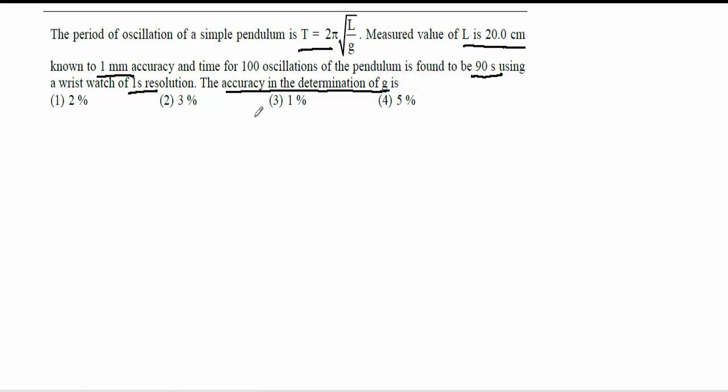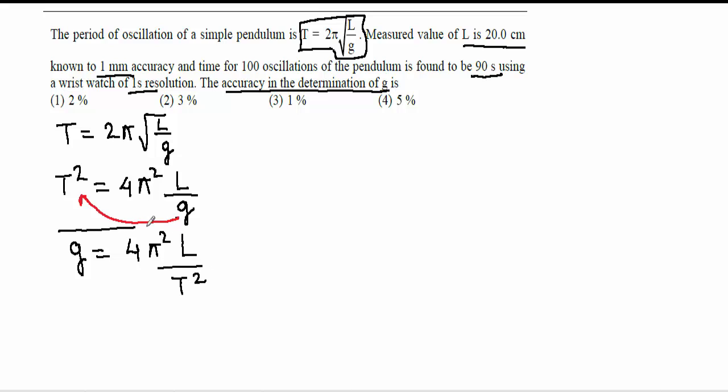So step one, we will rearrange this formula of time period to find g. The formula here is given. We have to remove this square root, so we take square of the whole equation. Left side is square, right side is square. That will remove the square root. Now we take this g to here and T squared to here. It will become g equals 4π² L over T squared. So we got the equation of g.